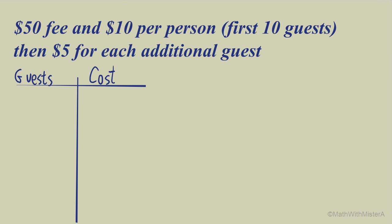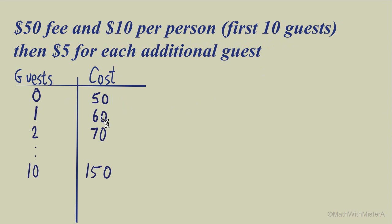Lastly, let's look at the blue plan: a $50 fee, $10 per person for the first 10 guests, then $5 for each additional guest. With zero guests the total cost is $50. One guest adds $10 bringing it to $60, two guests brings it to $70, all the way up to 10 guests at $10 each adding $100, giving a total of $150. So we have a linear model with a starting amount of $50 and a constant increase of $10 per person, but only for the first 10 guests.